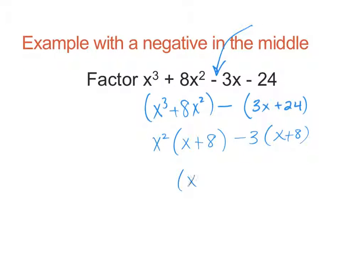And so when I distribute them out, I get x plus 8 times what's left? x squared minus 3. And I'm done. I've written my original polynomial as a multiplication.